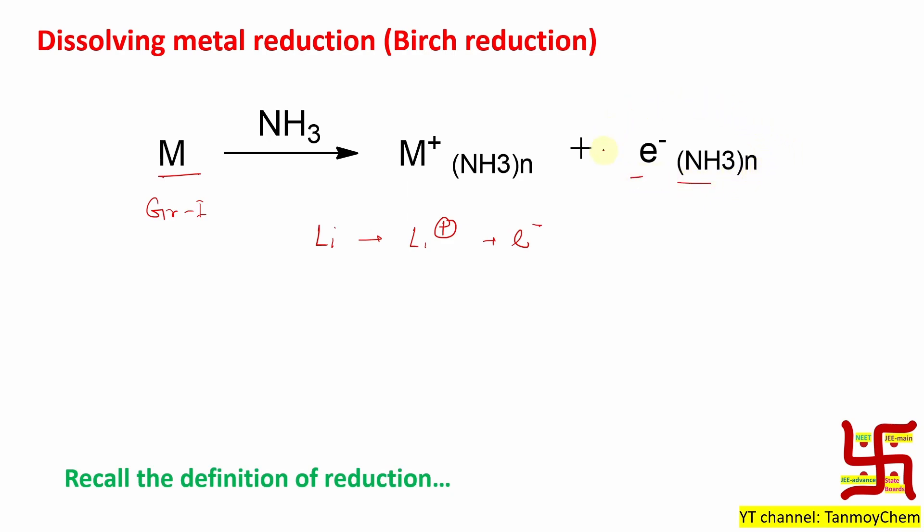The released electron remains as solvated or ammoniated. This ammoniated or ammonia-stabilized electron acts as the reducing agent. Now you will be confused - the electron as reducing agent? Yes, recall the definition of reduction. Three definitions: addition of hydrogen or electropositive metal, removal of oxygen or electronegative metal, or third was gain of electron. So whatever electron is given by these Group 1 metals will be taken by someone and that part will be reduced.